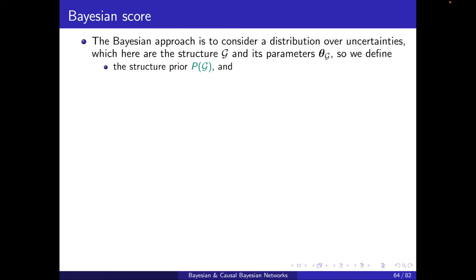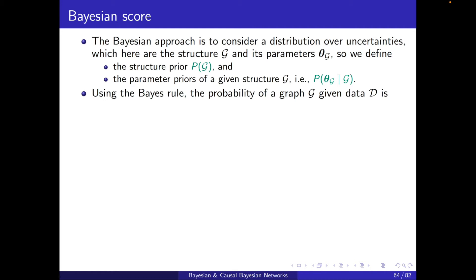We consider the structure prior p of g, as well as the parameter priors of a given structure g — p of theta g conditioned on g. Using Bayes' rule, the probability of a graph g given d can be written in this form.